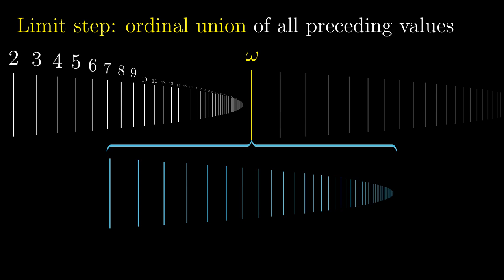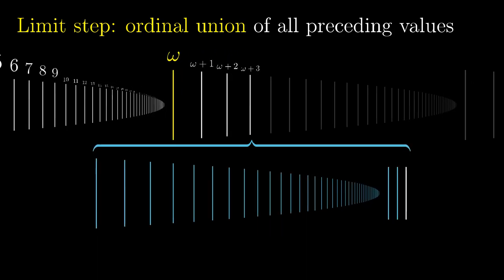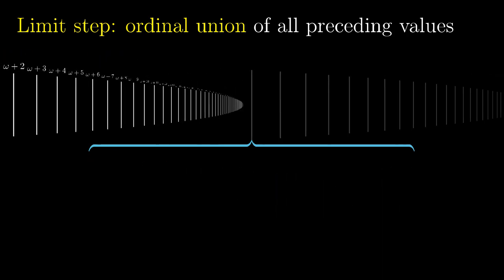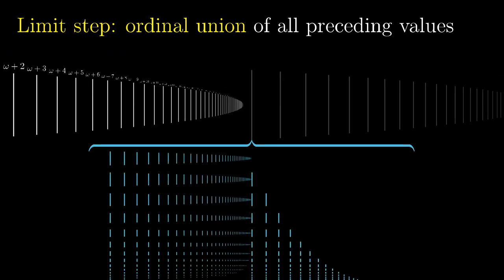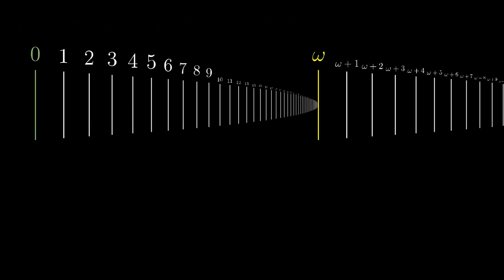Then we continue again with the successor step and get omega plus one, omega plus two, omega plus three and so on. The limit step again applies the ordinal union and creates an ordinal called reasonably enough omega plus omega. Technically we should also take the finite ordinal numbers when taking the union, but they don't make a difference and they don't fit into the screen. Well, we cannot really boost our ordinal construction by this approach, we need the underlying ordinal large enough in the first place.